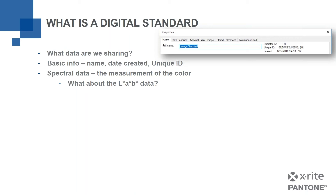LAB or LCH data all comes from the spectral data — that's all math from spectral data, but spectral data is the key. You have to have it because you might have two colors with the same LAB data under one light source or illuminant that don't match each other because their spectral data is not the same under another illuminant. That's why spectral data really matters.